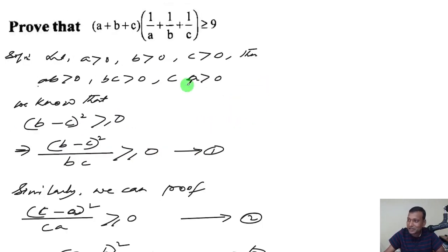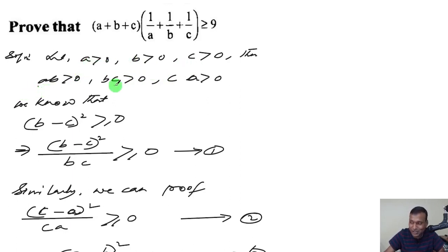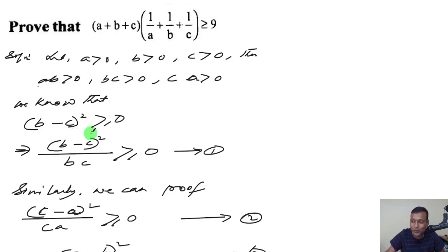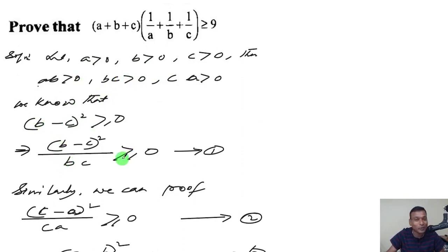Because a, b, c are positive, ab, bc, and ca are all positive. Also, the square of any number is non-negative, so each squared term divided by a positive product is always non-negative.